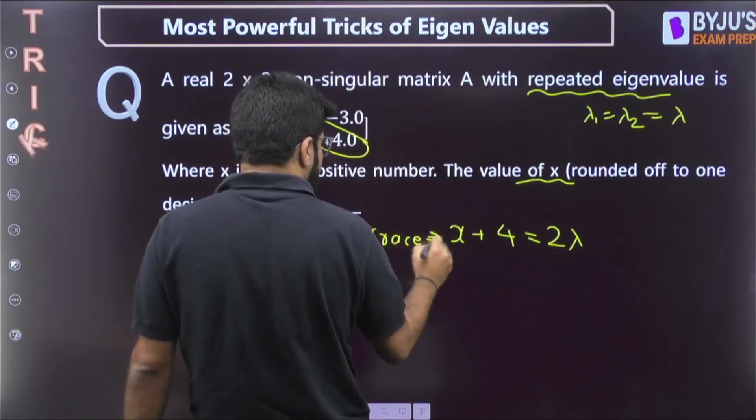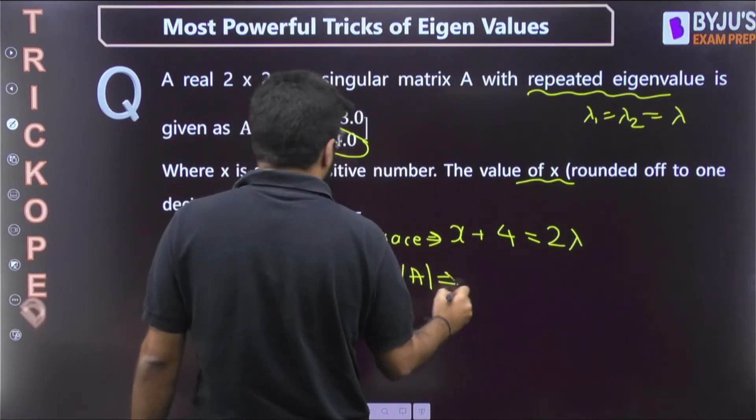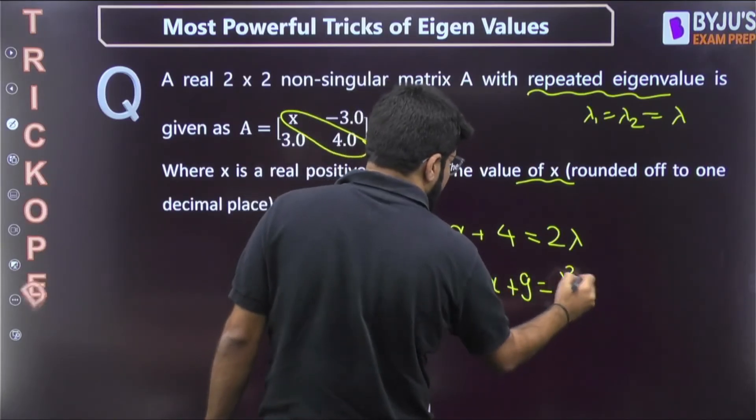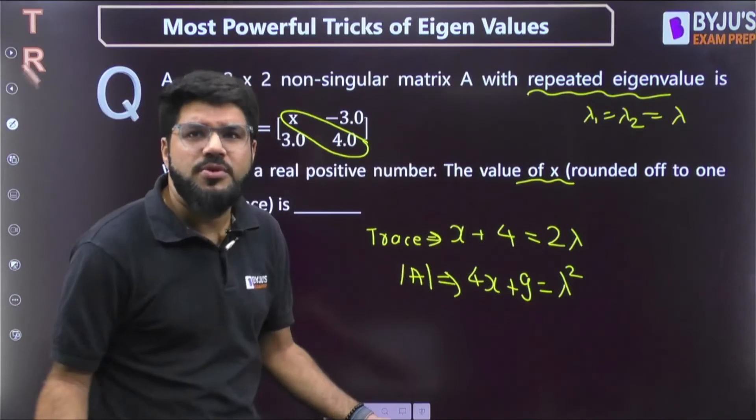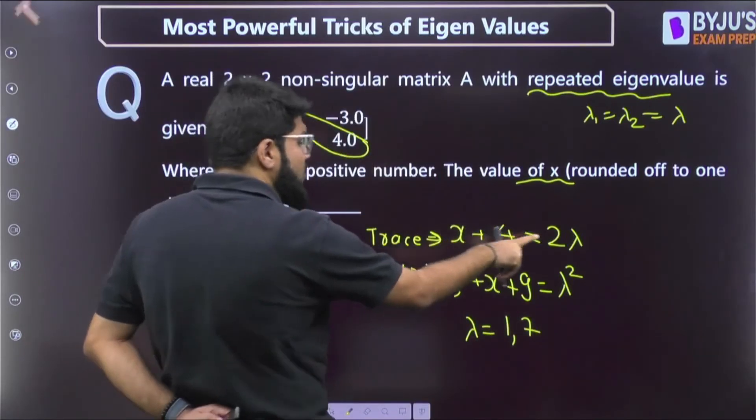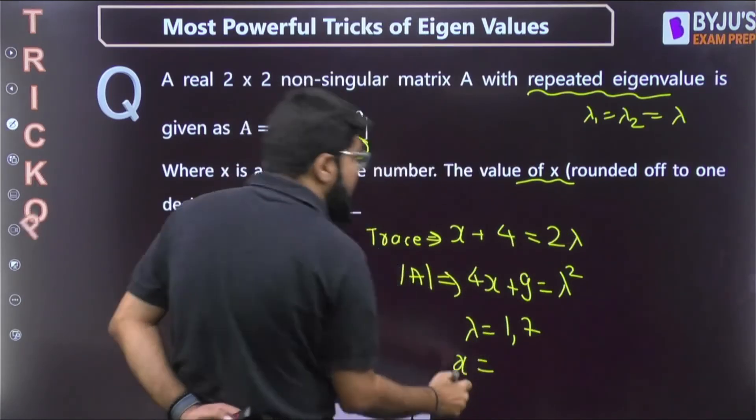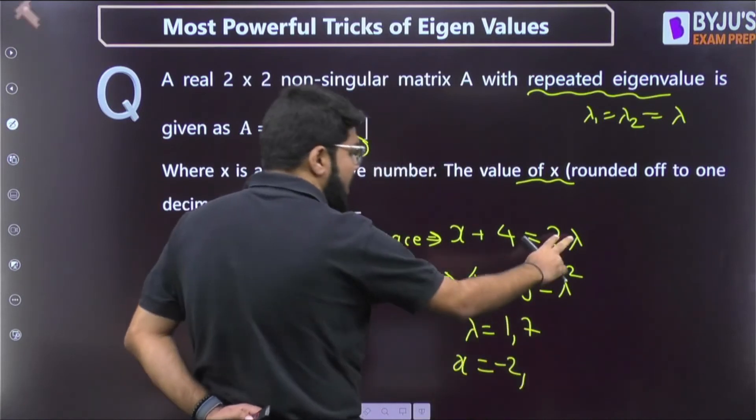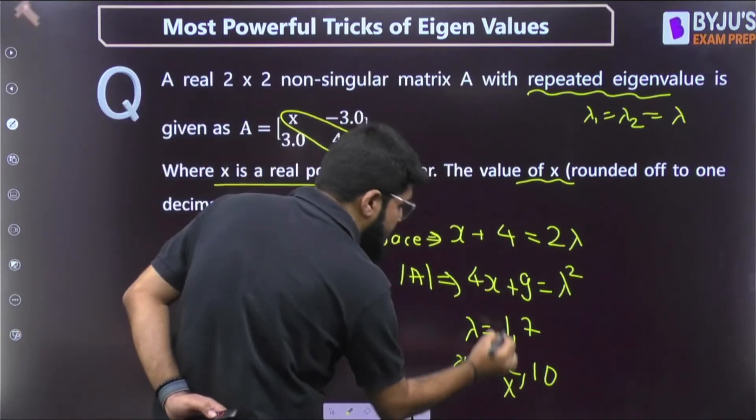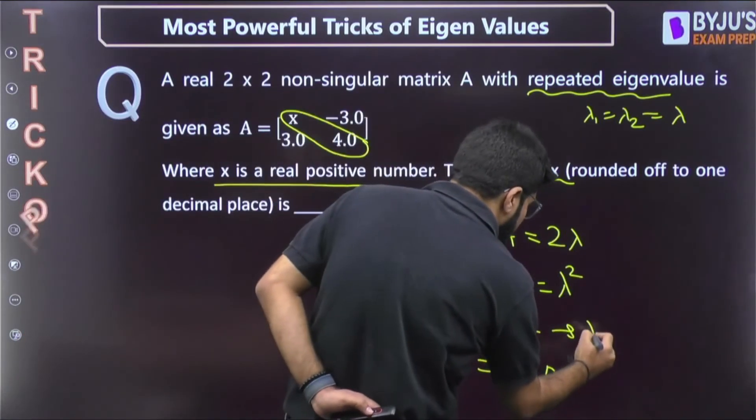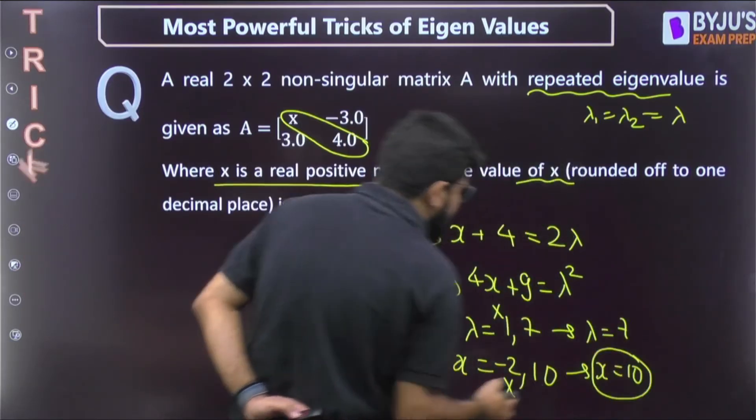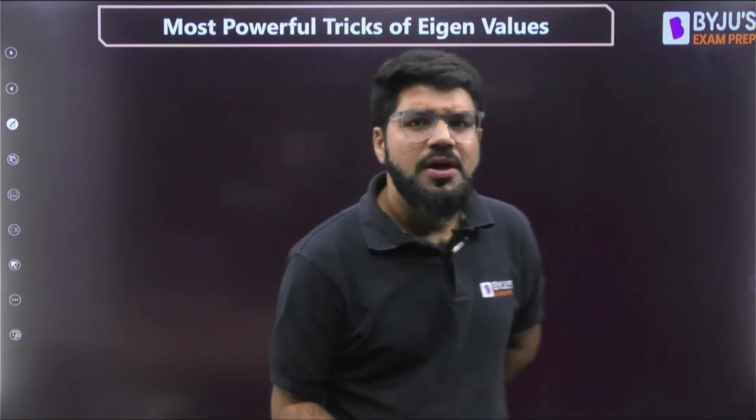On the other hand, the determinant of the matrix should be equal to 4x minus, minus 9 square, so 4x plus 9, and that is product of eigenvalue, that is lambda square. Two variables, two equations, you can solve it easily. Once you solve you will get lambda as 1 or 7. Putting down the lambda as 1 or 7, the value of x that is going to come: if lambda is 1, x will be minus 2; if lambda is 7, 14 minus 4, x will be 10. But x is a positive real number so minus 2 is not possible. Lambda equal to 1 not possible, so lambda should be 7. But they are asking x, x is equal to 10 is the correct answer.